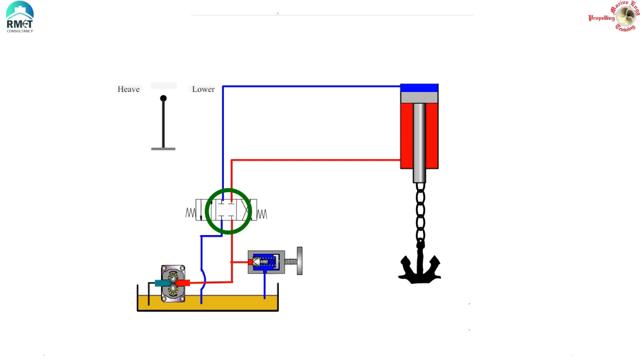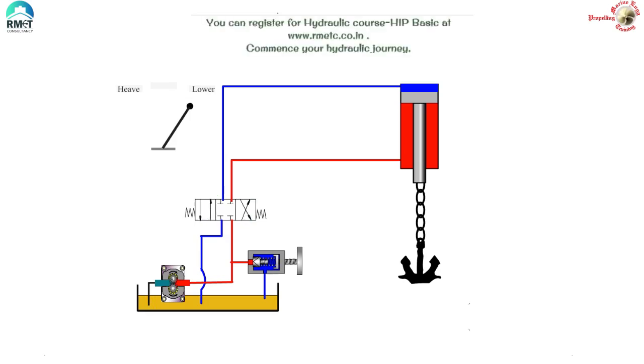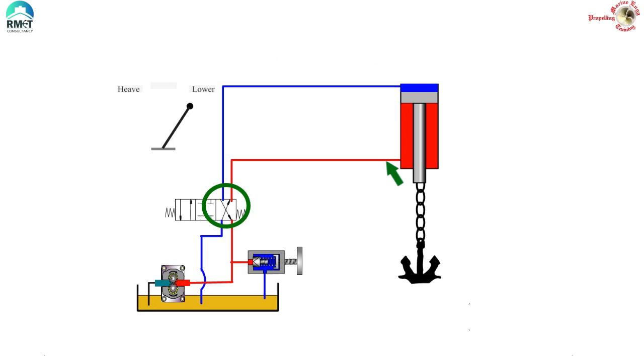For those who need some clarification on direction control valves, I suggest to see the earlier video uploaded on direction control valves in this channel. Now let's see what happens when we want to lower the anchor. You can see that while lowering the anchor, oil from the bottom of the piston is connected to the tank. It should be connected. The draining of the oil to the tank is now free flow.